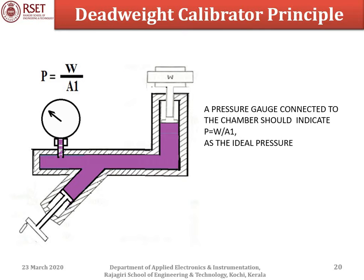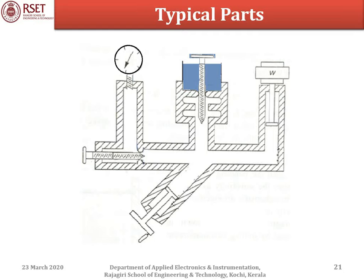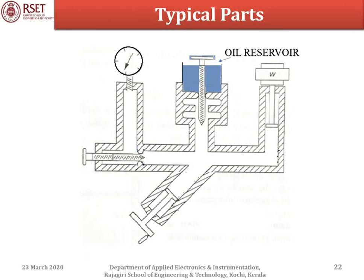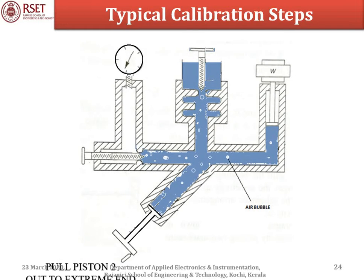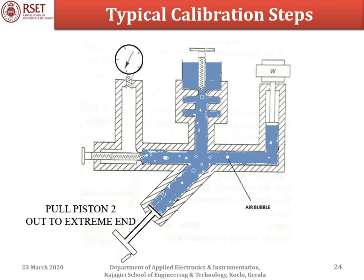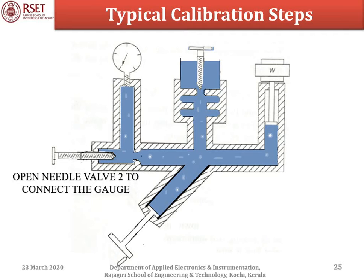Practical deadweight calibrators have additional parts. We have a gauge, piston 1, and piston 2. An oil reservoir supplies oil to the chamber when needle valve 1 is opened. Needle valve 2 is used to isolate the gauge tubing from the chamber. When needle valve 1 is opened, oil flows in; as piston 2 is pulled in, more oil enters. Needle valve 2 is then opened to connect the gauge. However, air bubbles may still be present, and to fully apply Pascal's law, these must be eliminated through a process called priming.